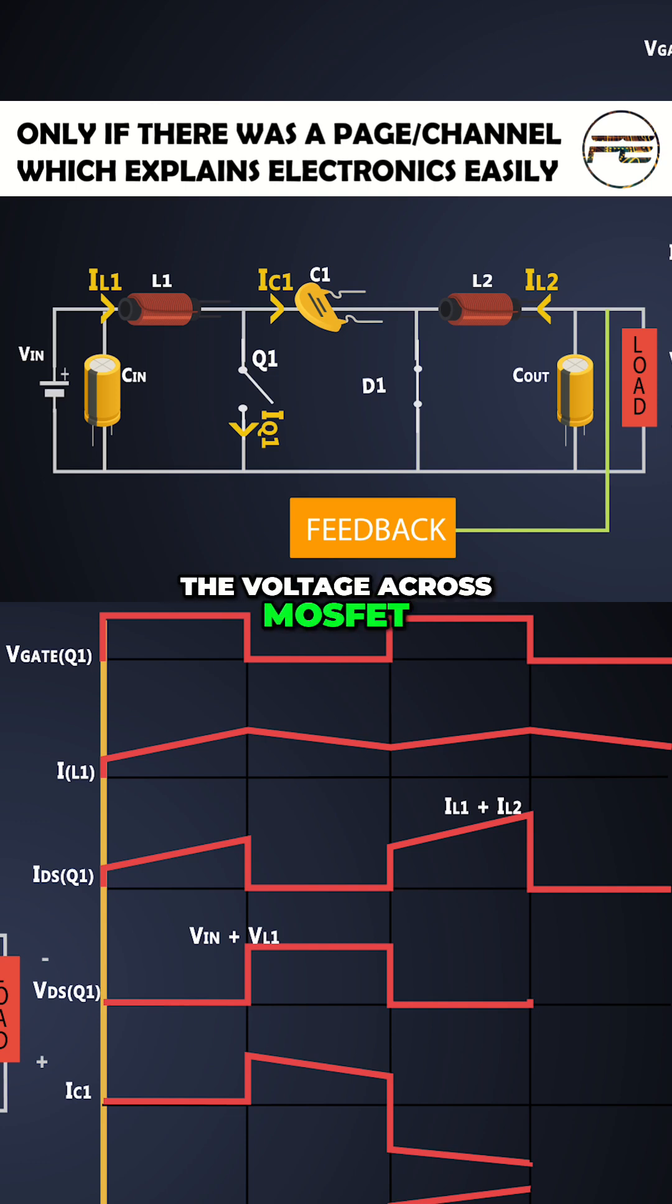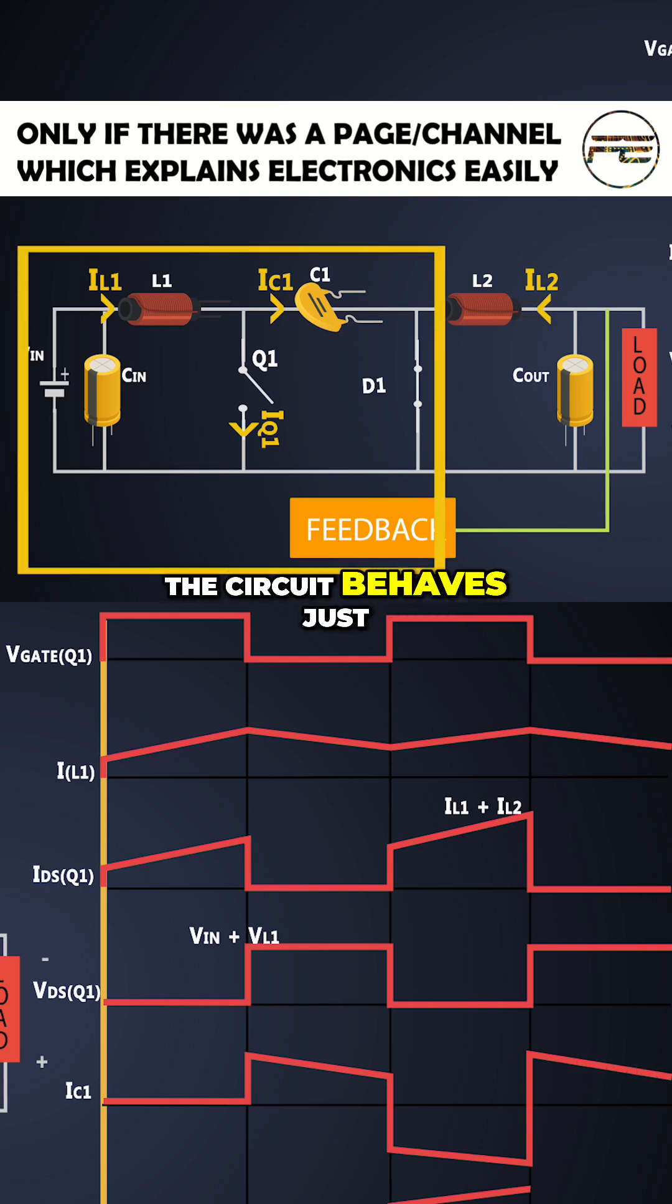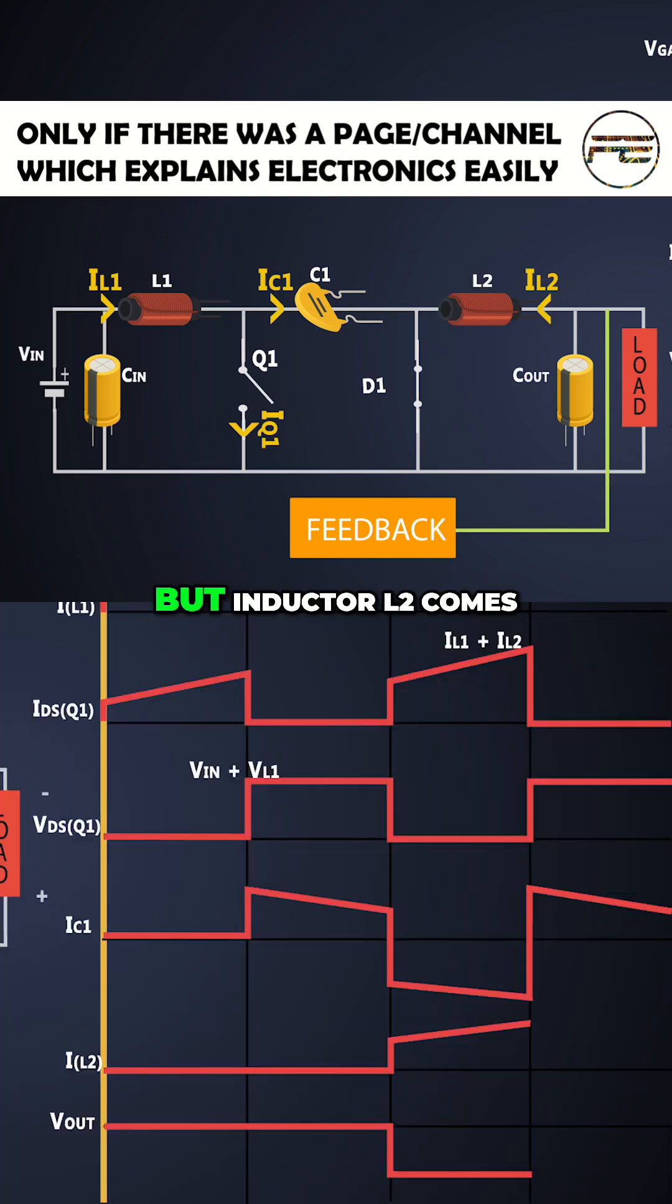The voltage across the MOSFET will be equal to the input voltage plus flyback voltage of the inductor L1. And there is no current flowing through the MOSFET.